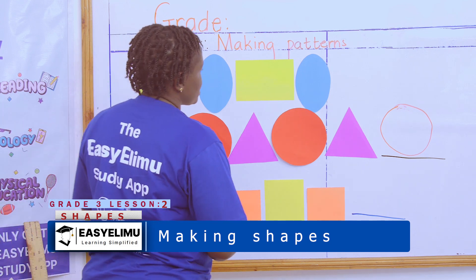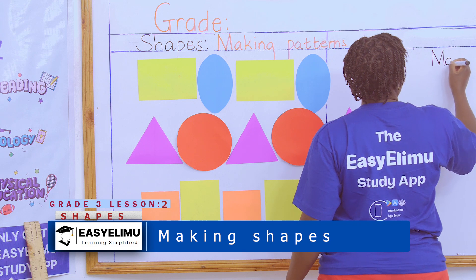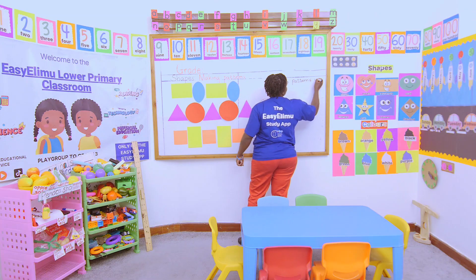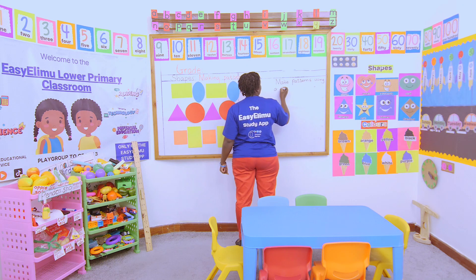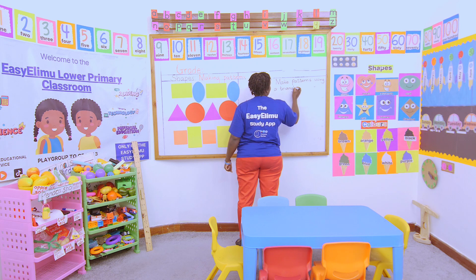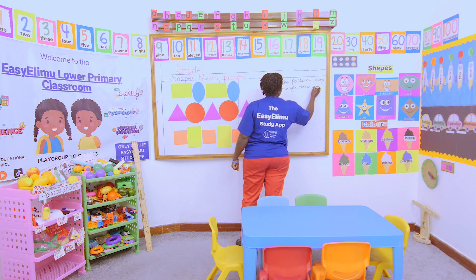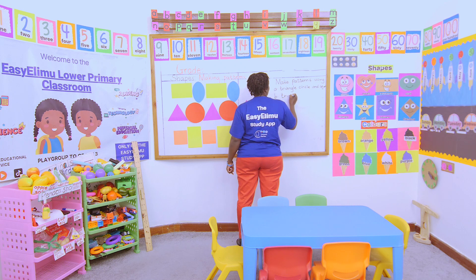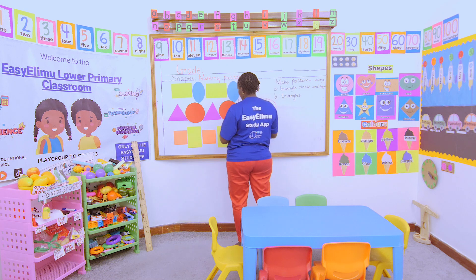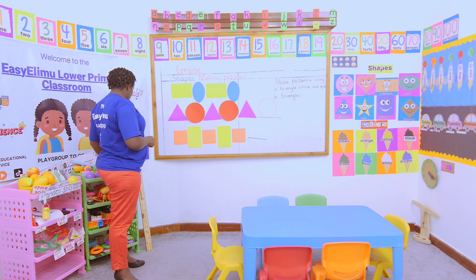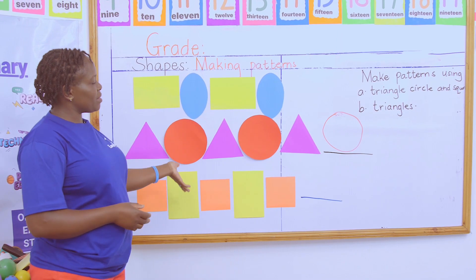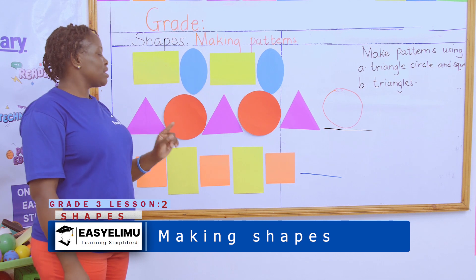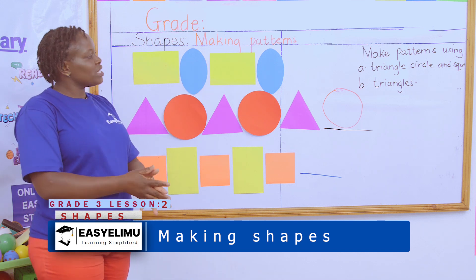So I also want you to make patterns. After you've done this question, I want you to do this one again: make patterns using a triangle, circle, and square — and we'll see who does the beautiful job. Then for part B, you only make patterns using triangles only. Make sure you draw in your books, color them nicely the way they are, then make your patterns. Complete this one and make your own patterns using the triangle, circle, and square.